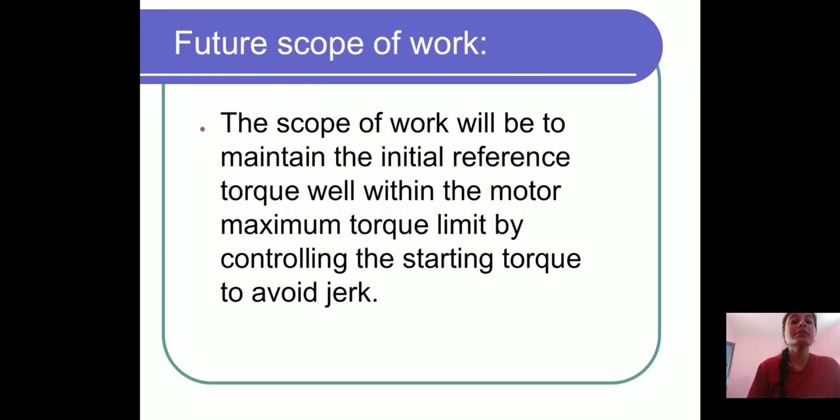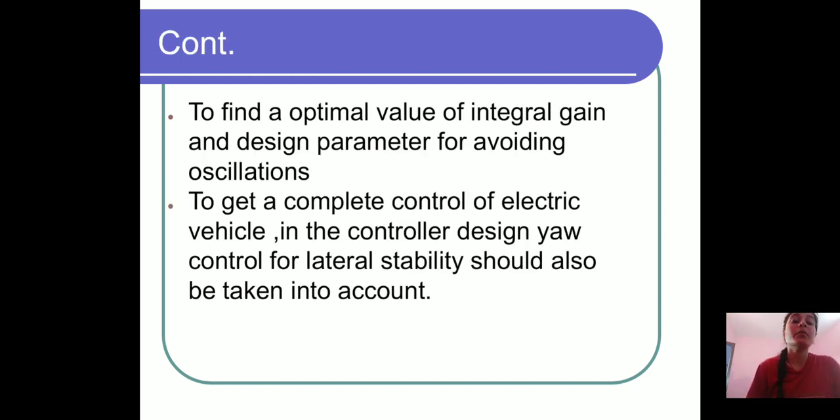What is the future scope of work? The scope of work will be to maintain the initial reference torque well within the motor maximum torque limit by controlling the starting torque to avoid jerk. To find the optimal value of integral gain and design parameter for avoiding oscillations. And to get complete control of electric vehicle, in the controller design the control for lateral stability should also be taken into account.